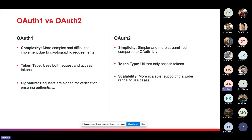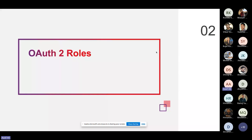Let's look at the differences between OAuth1 and OAuth2. OAuth1 is more complex and difficult to implement due to cryptographic requirements; it uses both request tokens and access tokens, and requests are signed for verification to ensure authenticity. OAuth2, on the other hand, is simpler and more streamlined — it utilizes only access tokens and is more scalable, supporting a wider range of use cases.